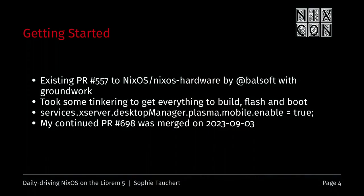So how did I get started? I actually found an existing pull request to NixOS hardware, and there was some groundwork in there — for example, there was already work on Purism's kernel and u-boot fork. It didn't actually work out of the box with that pull request, so I was tinkering a little bit. At some point I got everything to build correctly and updated the packages to the most recent versions released by Purism upstream.